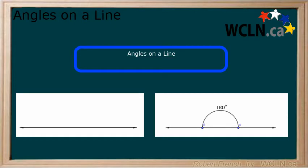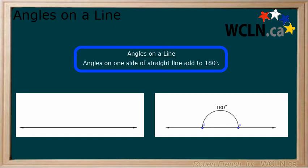This brings us to our angles on a line rule. Angles on one side of a straight line add to 180 degrees.